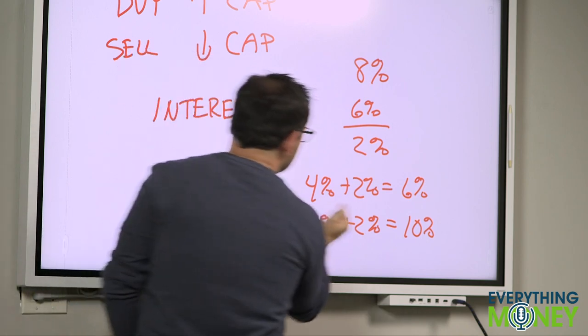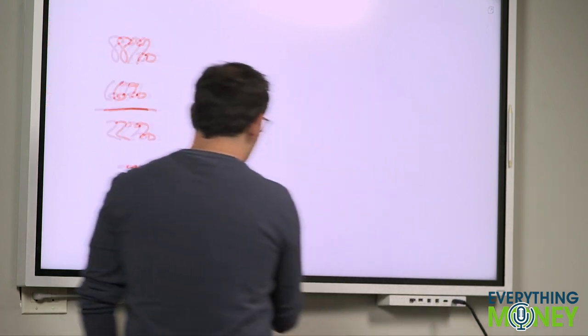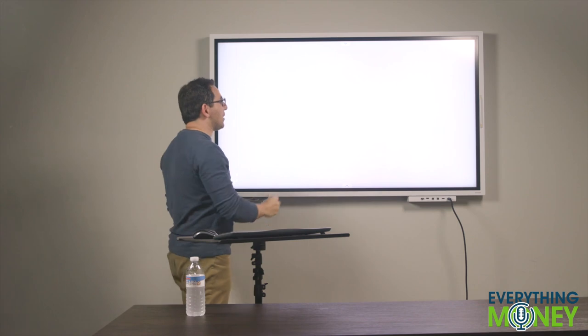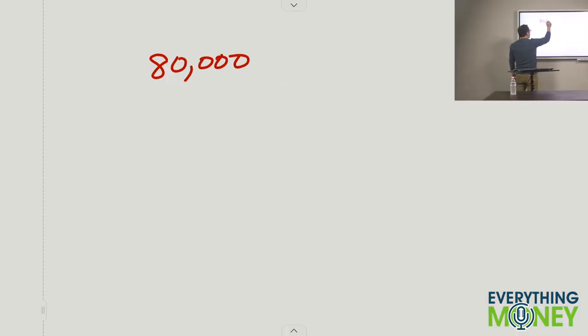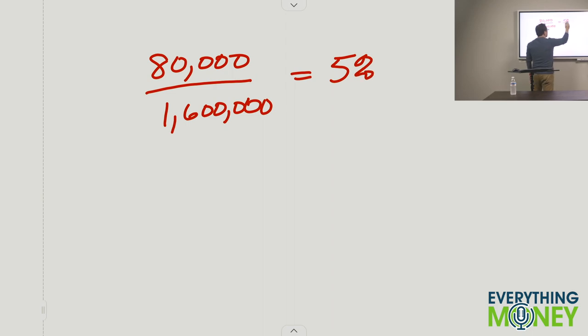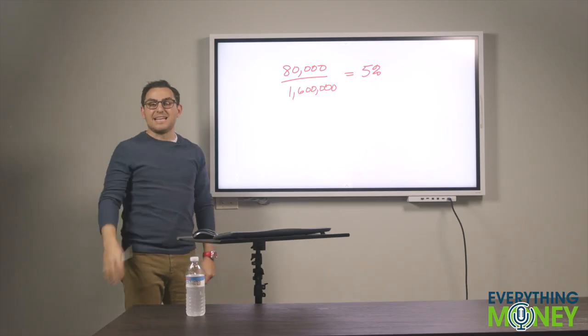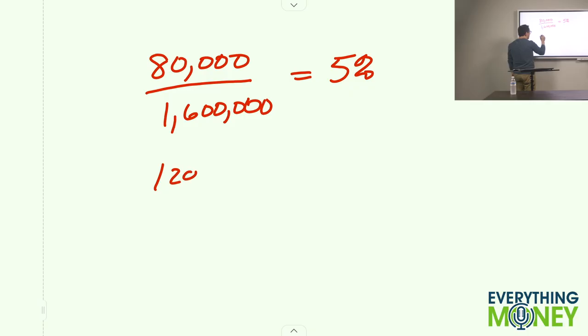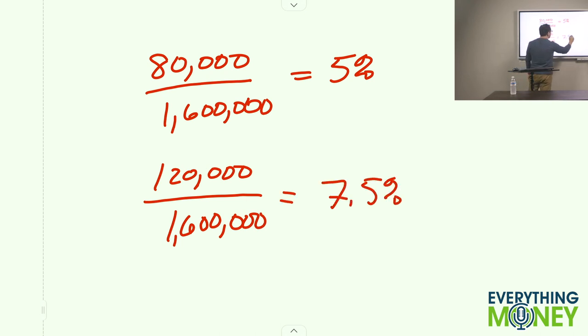Now, what you asked earlier, Seth, was how can you pay a lower cap rate? I have bought properties at 4% and 5% cap rates, which is a very low cap rate, very high price. But that's because I could drive income up a lot. So let's say I buy a property that generates $80,000 a year and I pay 1.6 million for it. 5% cap rate, like before. That's terrible. However, let's say I know the property. Next day, I know I can increase rents and profit and make that same property make $120,000 a year. Now, on my original purchase price of $1,600,000, that is a 7.5% cap rate.